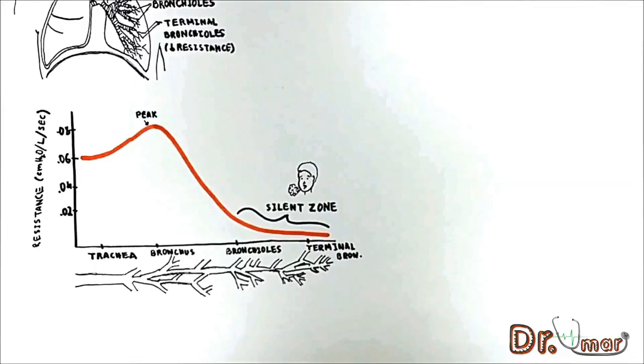This is because you do not feel slight increases in resistance in small airways because there are a lot of bronchioles and as a unit it is really a low resistant airway. The disease should progress to a certain point before the patient feels dyspnea.